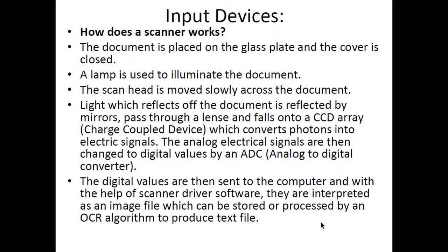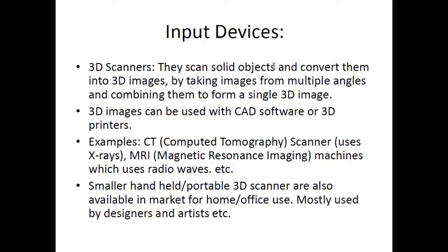The second type is 3D scanners. They scan solid objects and convert them into 3D images or 3D models by taking images from multiple angles and combining them. These 3D models can be used with CAD (Computer Aided Design) software or 3D printers. Examples include CT (Computed Tomography) scanners using X-rays and MRI (Magnetic Resonance Imaging) machines using radio waves, both used in hospitals. Smaller handheld or portable 3D scanners are also available for home, office, or workshop use, mostly by designers, artists, and sculptors.